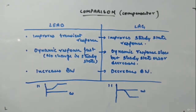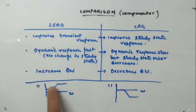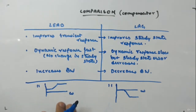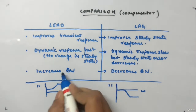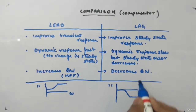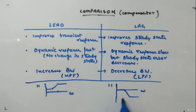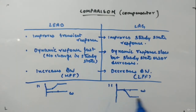Lead compensator increases the bandwidth. We have seen the magnitude versus frequency plot — it behaves as a high pass filter. The magnitude response has two corner frequencies, and the curve looks like a high pass filter — it is passing the high frequency components.